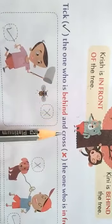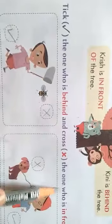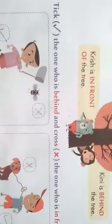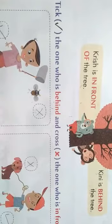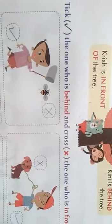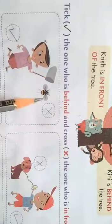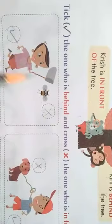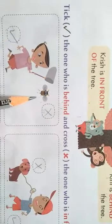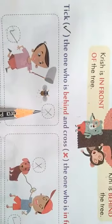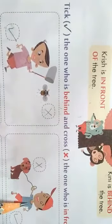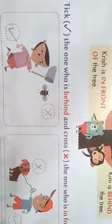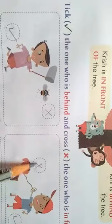Look at the question. Tick the one who is behind the tree and cross the one who is in front. Jo piche hai, uspe right lagana hai; jo aage hai, uspe cross lagana hai. In the first picture, a boy and a bee — who is behind? Yes, the boy — put the tick. Who is in front? Yes, the bee — put the cross. In the next picture, who is behind? The boy — put the tick. Who is in front? Yes, the doggy — put the cross.